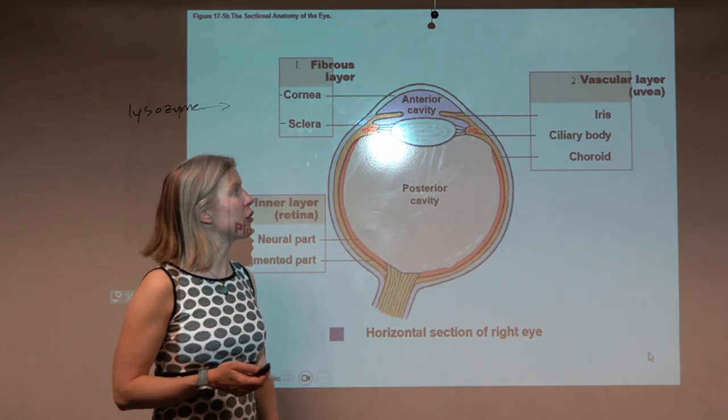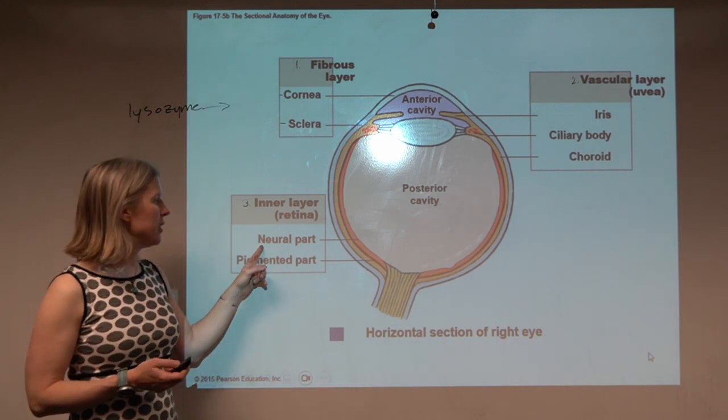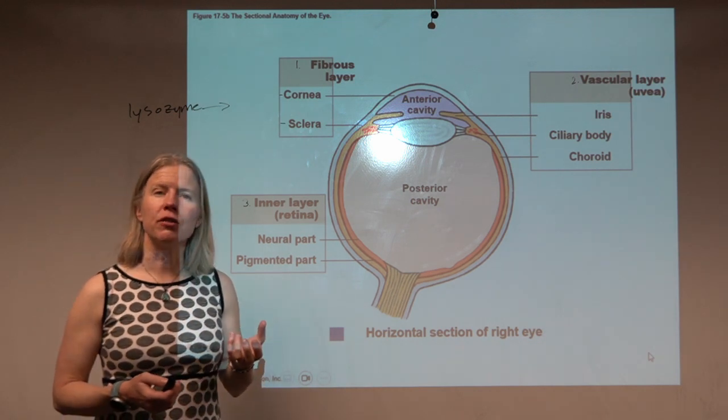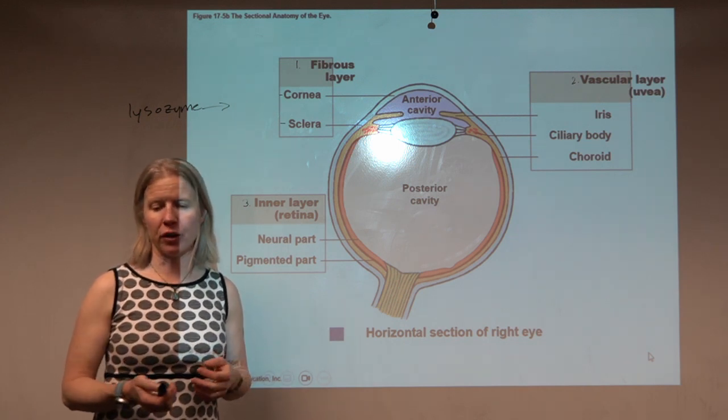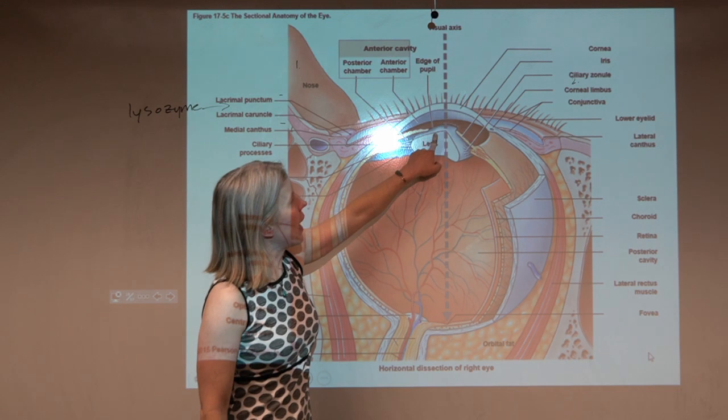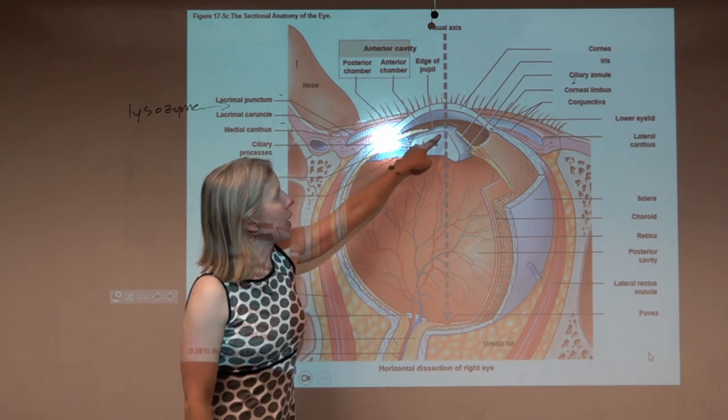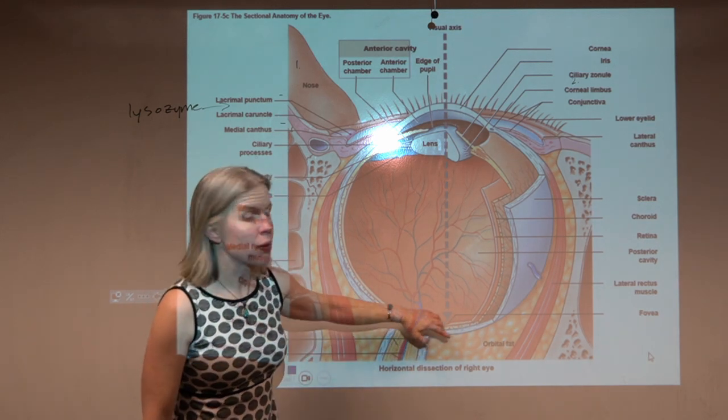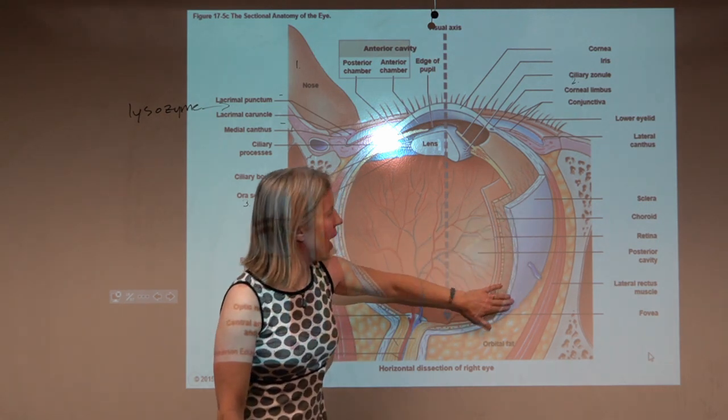This innermost layer then, in this peach-ish color, is the retina. And what we're going to see with the retina, notice it says the neural part. The retina is the part of your eye that contains the rods, which are able to sense light and dark, and the cones, which actually give you your color vision.